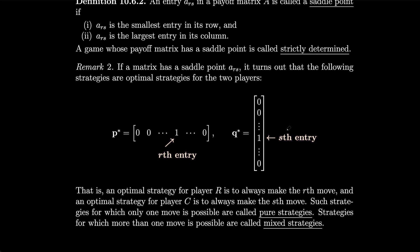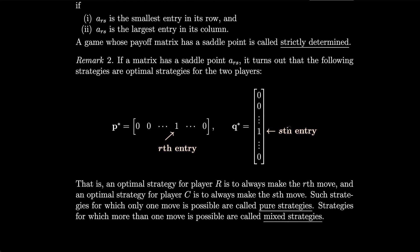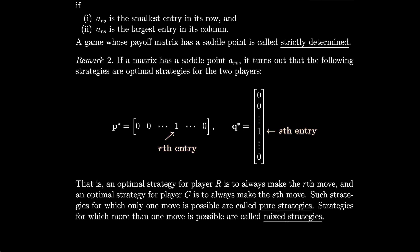If a matrix has a saddle point a_rs, the following strategies are optimal: for P*, the r-th entry should be 1 and the rest 0; for Q*, the s-th entry should be 1. That is, an optimal strategy for player R is to always make the r-th move, and an optimal strategy for player C is to always make the s-th move. Such strategies where only one move is made are called pure strategies, while strategies where more than one move is possible are called mixed strategies.